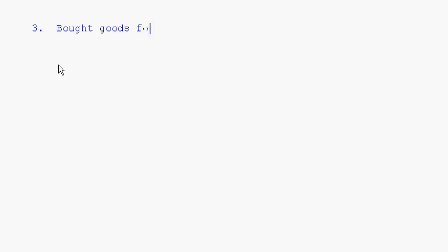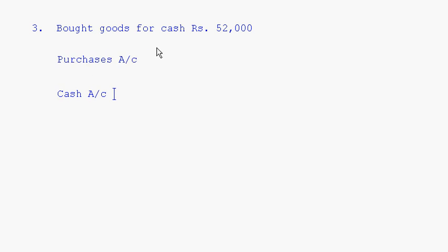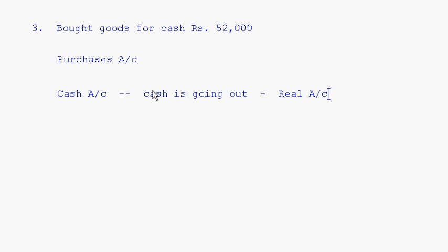Next entry: Bought goods for cash, rupees 52,000. Goods means what the firm is dealing in — the main business line. We don't have a goods account; when we buy goods it is the purchases account. The other account affected is cash account. When buying goods we pay cash — cash is going out. Cash is a real account, so credit what goes out.